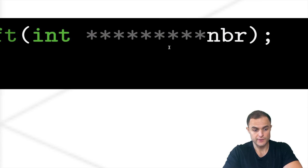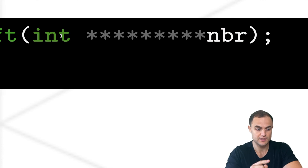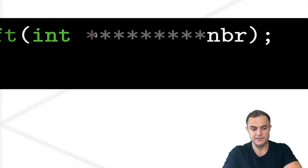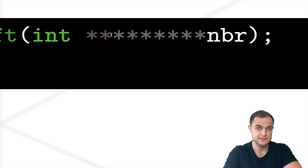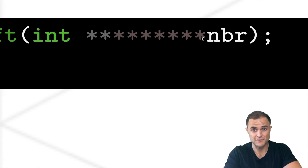As you can clearly see, we have nine stars here. How can I read this argument? If I dereference nine times this pointer 'nbr', I get back my integer - reaching the final destination. If I dereference once, I get an 8-level pointer. If I dereference twice, I get a 7-level pointer. Let's jump into the code so you can further understand what I'm talking about.